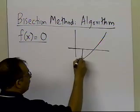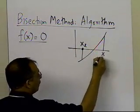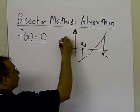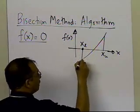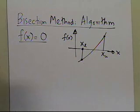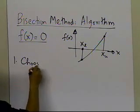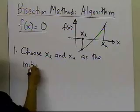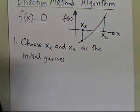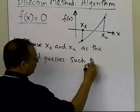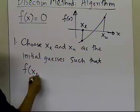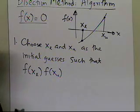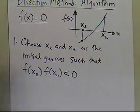The bisection method is based on the theorem that if we have a point xl and a point xu, and the function f(x) is continuous between xl and xu, and the function is changing sign — negative here and positive here — then there is at least one root between xl and xu.